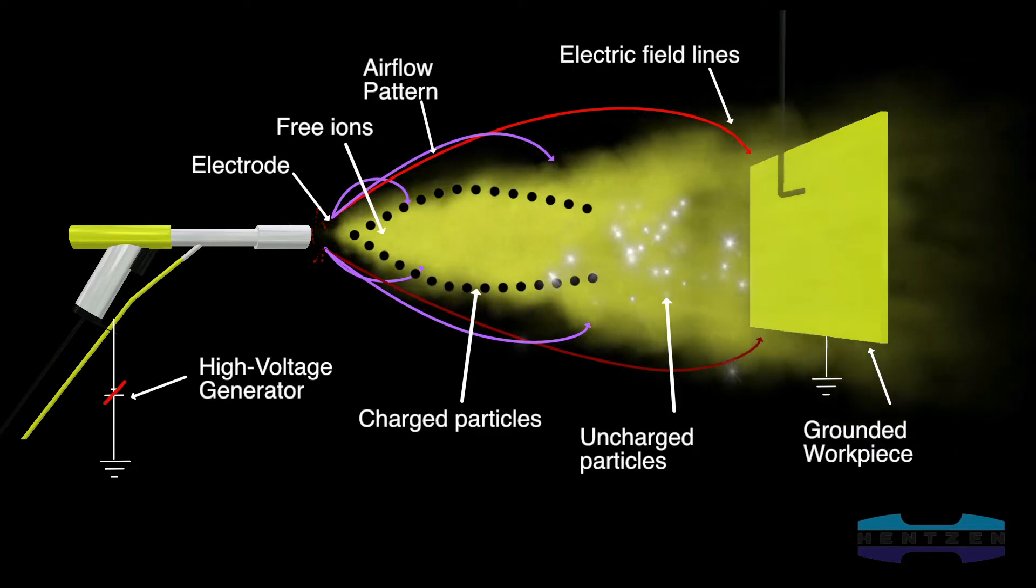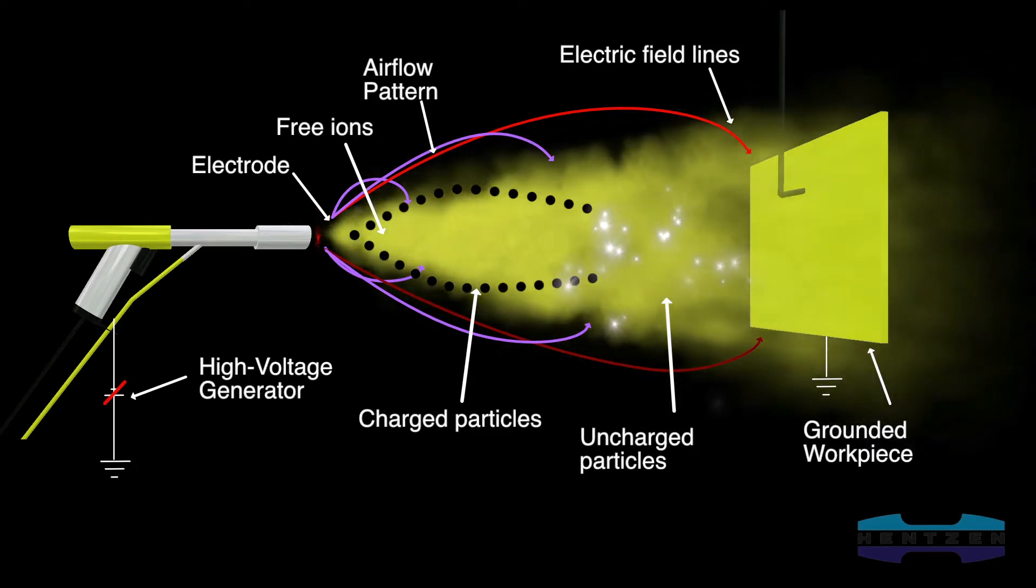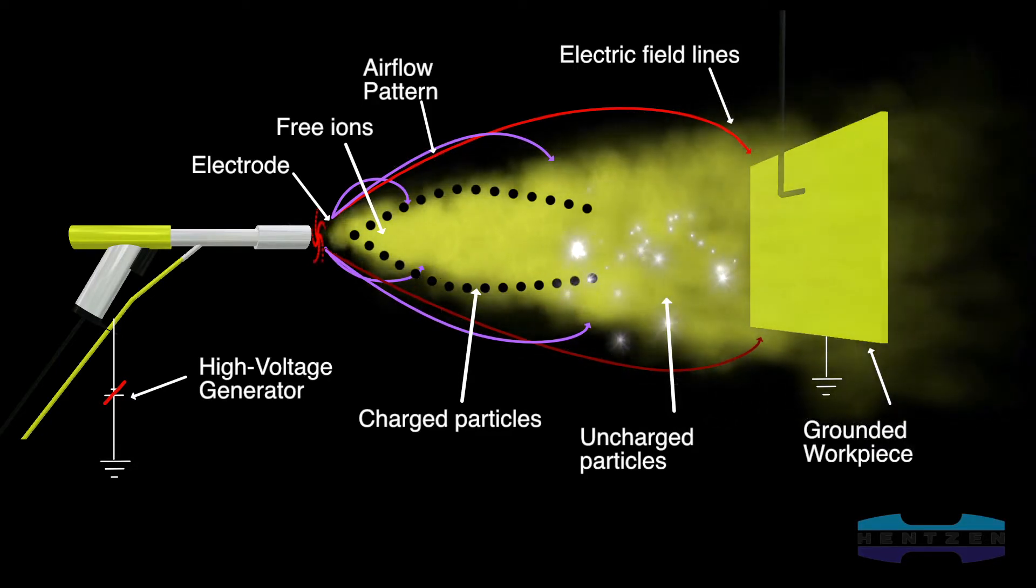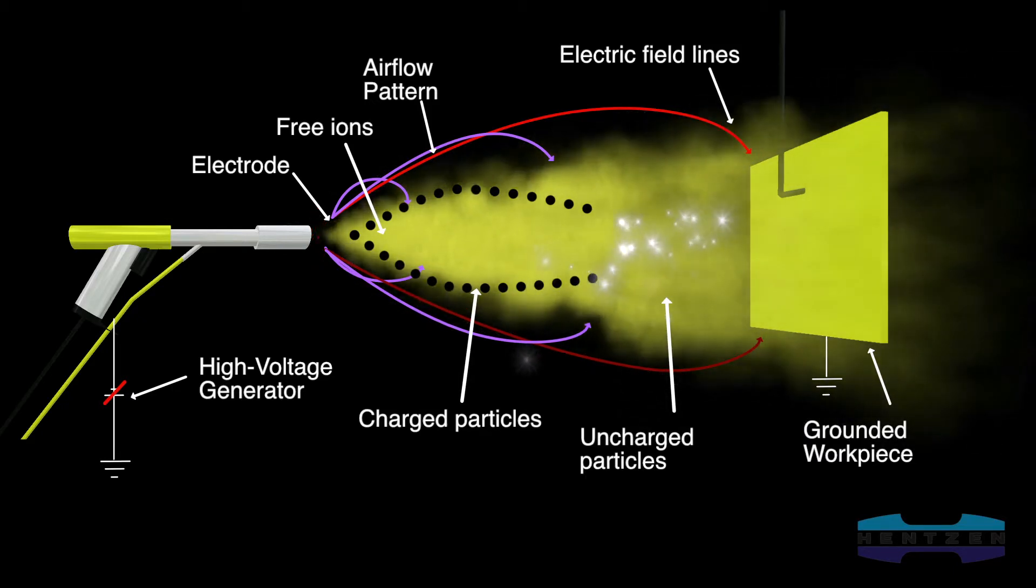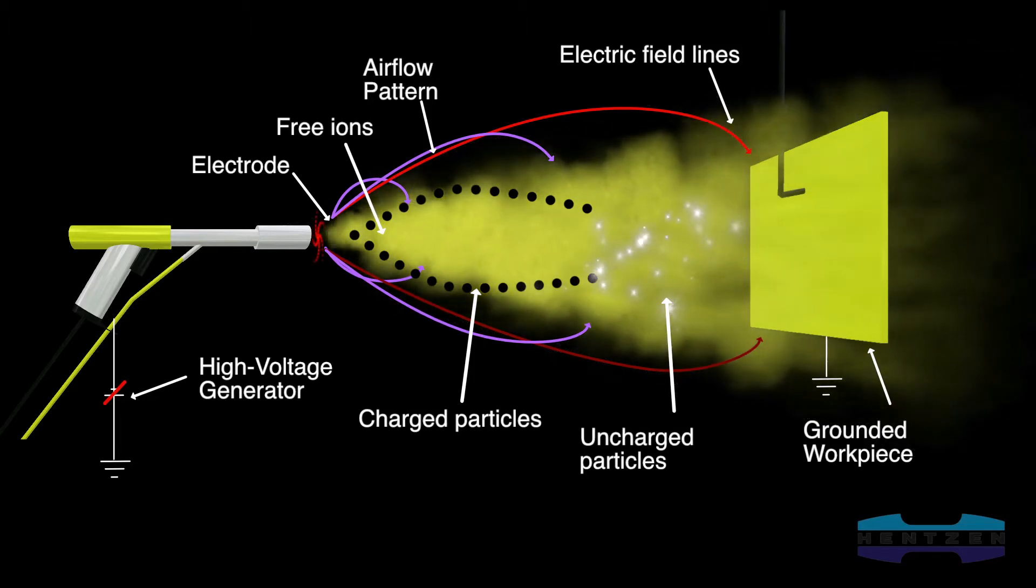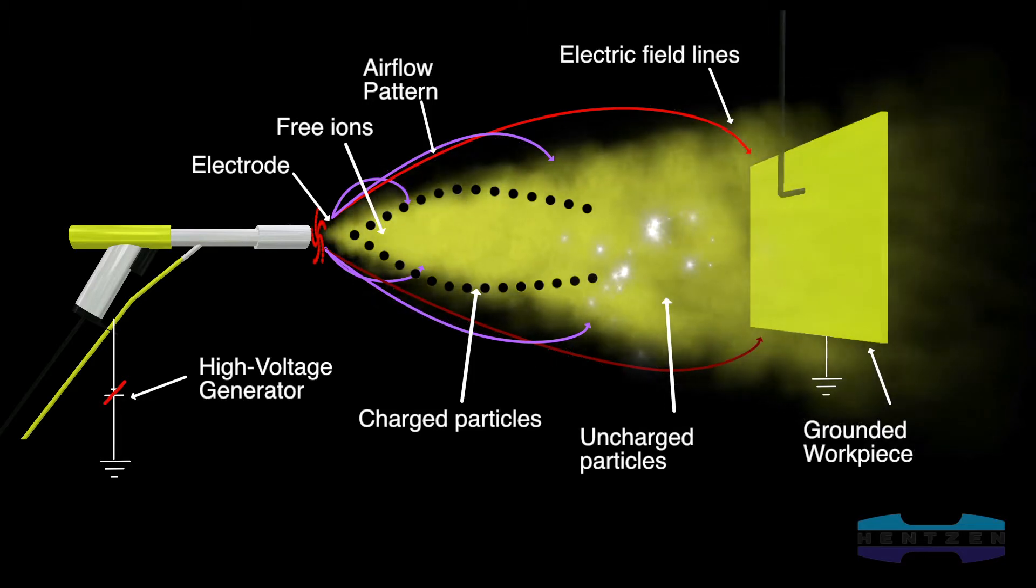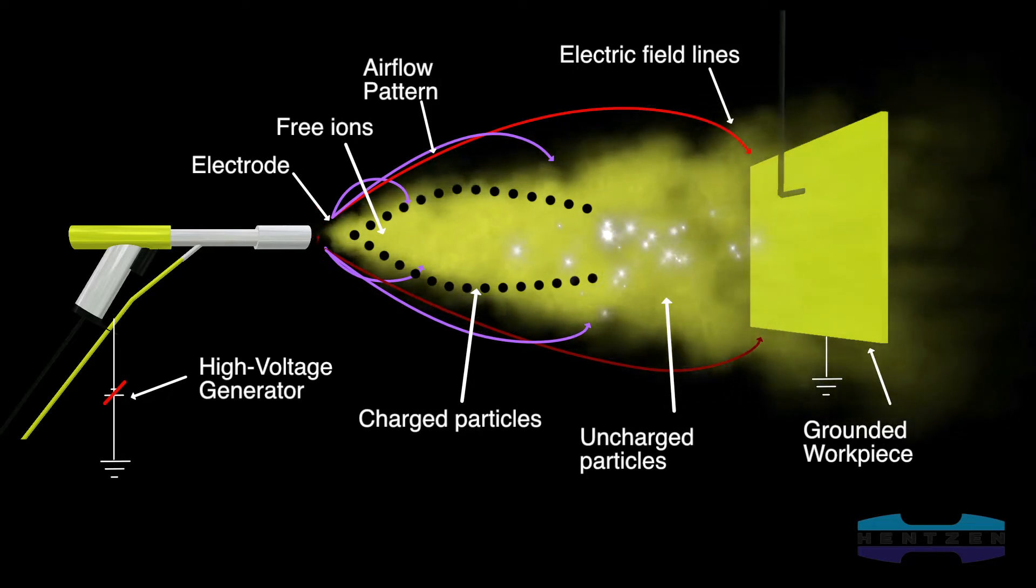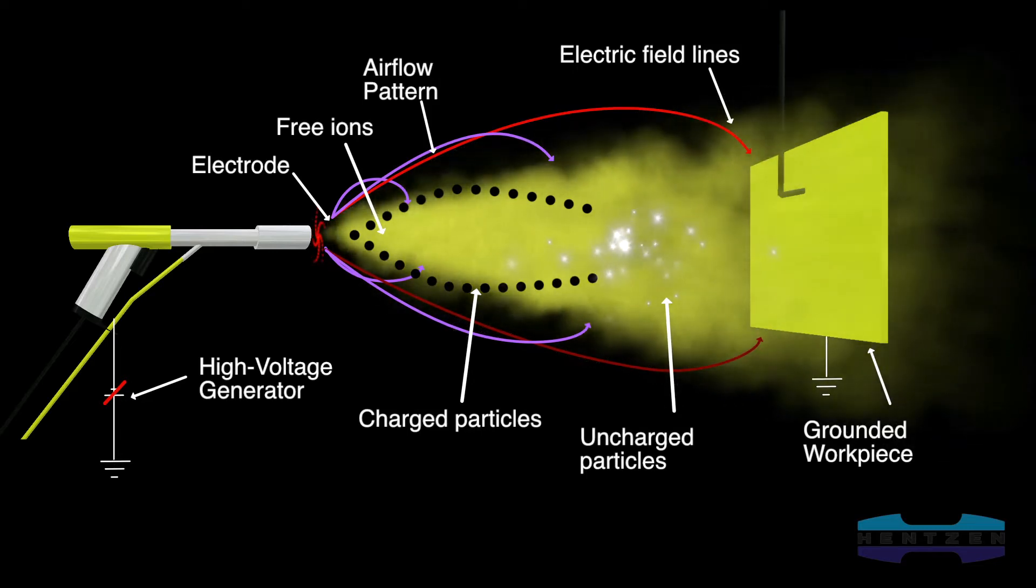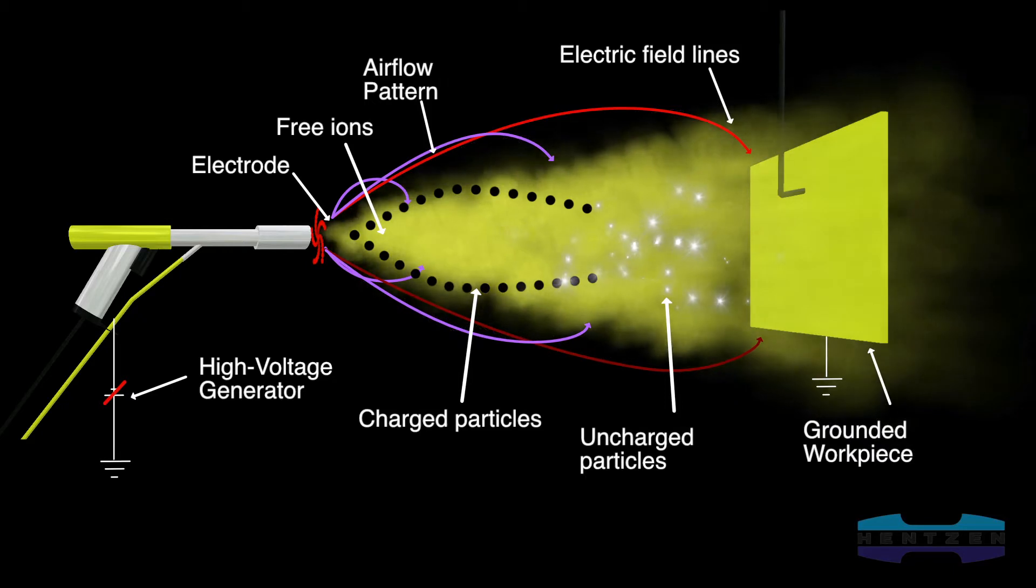If the electric field outside corona discharge is sufficiently strong, the ions attach themselves to powder as we start spraying. As a result, a cloud of charged particles and free unattached ions is created between the gun and part. The cumulative charge of powder particles and free ions comprising the cloud is called space charge.